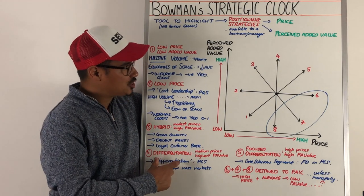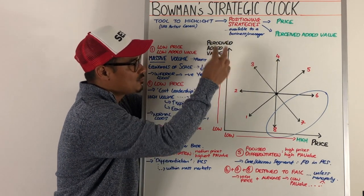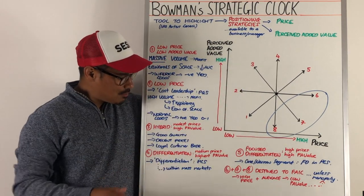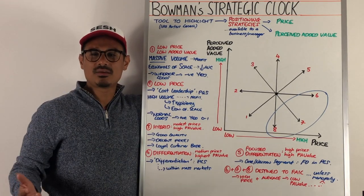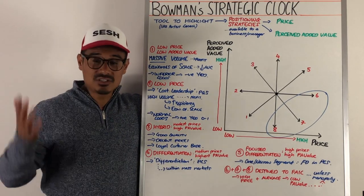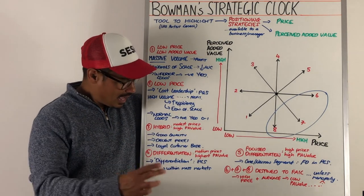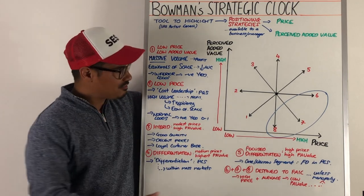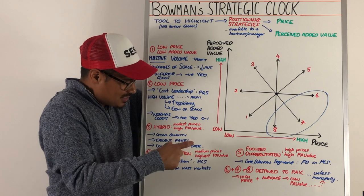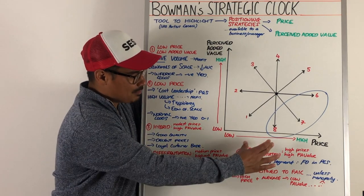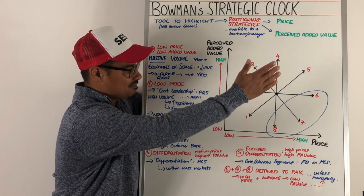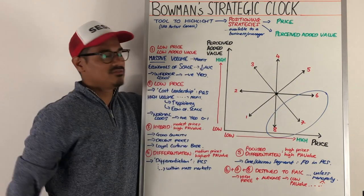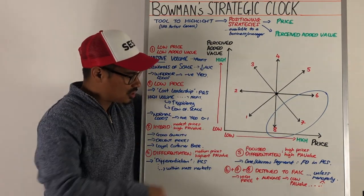Position number four is differentiation — the highest perceived added value to the customer at a medium or modest price. In terms of Porter's generic strategies, this relates to the differentiation column, and it makes sense when you're doing it for mass markets — you're unique within a mass market. Position number five is focused differentiation, slightly different in that it's not differentiation to a mass market but to a niche market. Here you have high prices but also relatively high perceived added value, probably because you're targeting one specific segment.